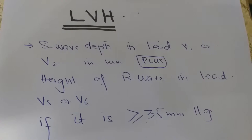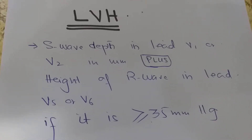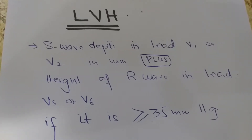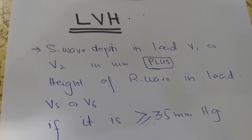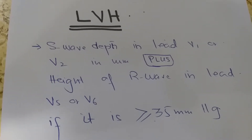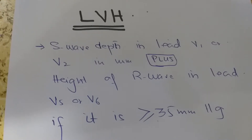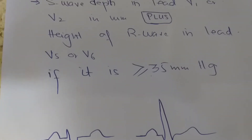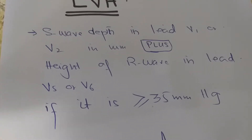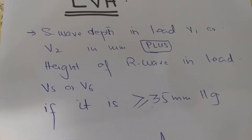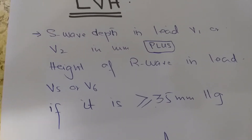When we talk about finding whether an ECG has left ventricular hypertrophy or not, we look at the depth of the S wave in lead V1 or V2 — whichever is the deeper one — and take its depth in millimeters. We then also take the height of the R wave in lead V5 or V6 — whichever is the taller one — and count its height in millimeters.